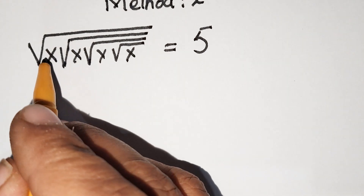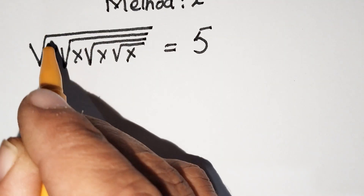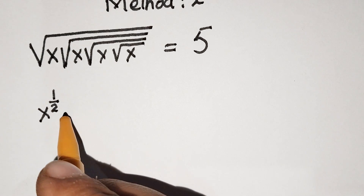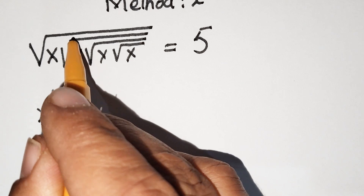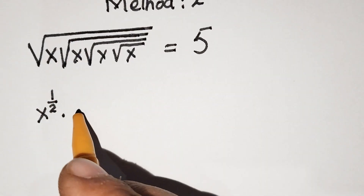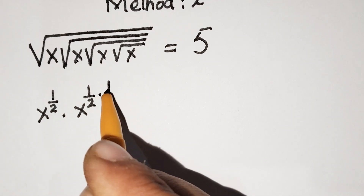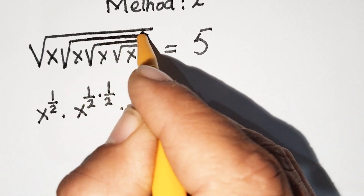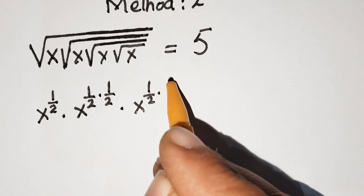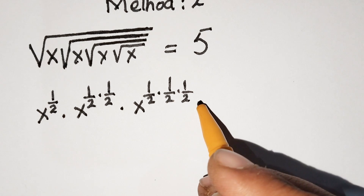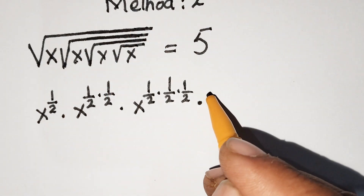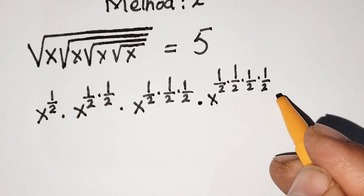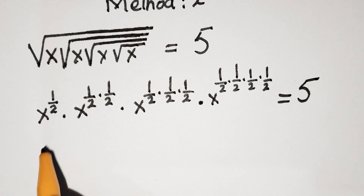The outermost x has one square root, so we write x to the power 1 over 2. The next x has two square roots, so we write x to the power 1 over 2 times 1 over 2. The next x has three square roots, so x to the power 1 over 2 times 1 over 2 times 1 over 2. The last x has four square roots, so x to the power 1 over 2 times 1 over 2 times 1 over 2 times 1 over 2, and this all equals 5.